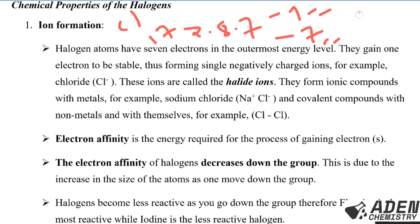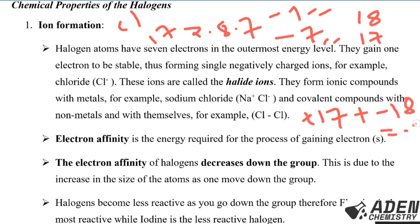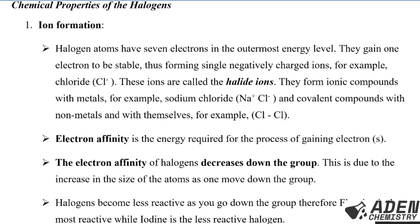So the chloride ion will have 18 electrons and 17 protons. To determine the charge, we take the protons which are positively charged (17) and add the electrons which are negatively charged (18), giving us an overall charge of negative one. That is why the chloride ion is written as Cl⁻. These ions are called halide ions.